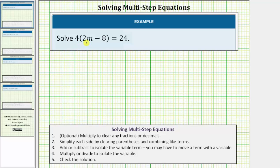We want to solve the equation four times the quantity two m minus eight equals 24. The solution is a value m that satisfies the equation or makes the equation true, which means the solution is a value m that makes the expression four times the quantity two m minus eight equal to 24.